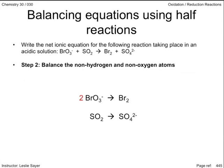In step two, we balance atoms other than hydrogen and oxygen. A coefficient of two balances up the bromine atoms. The sulfur atoms are already balanced.